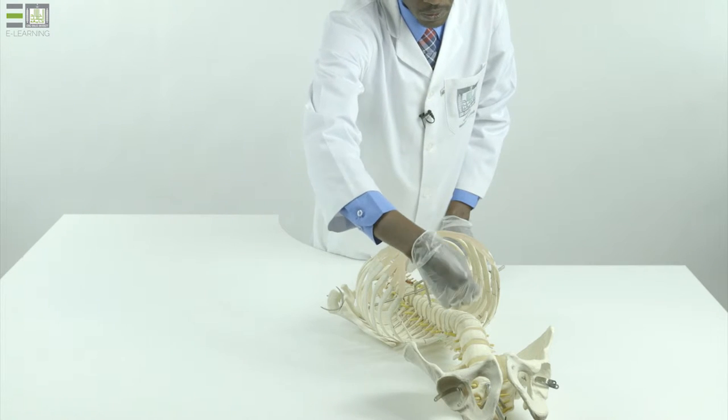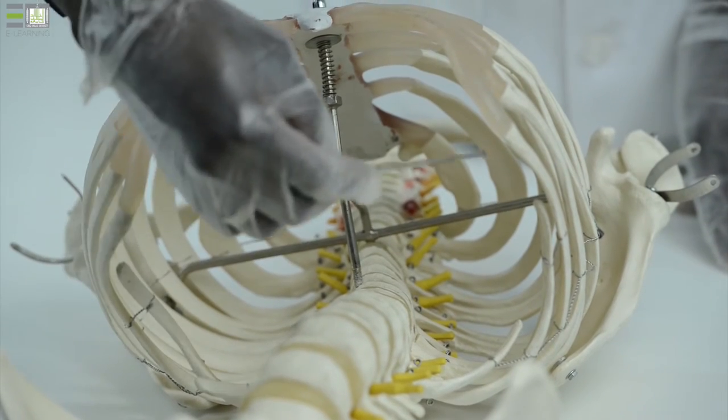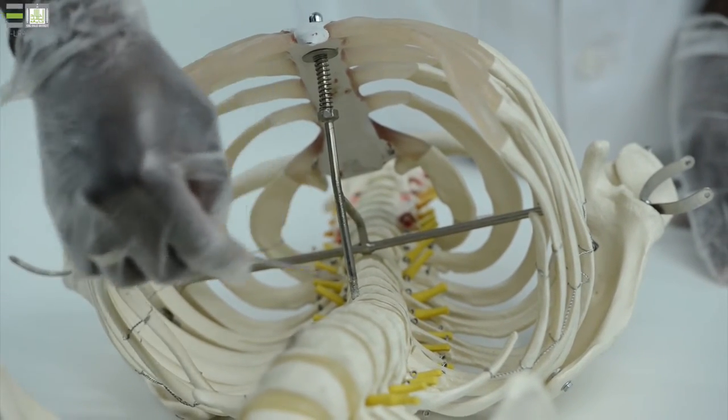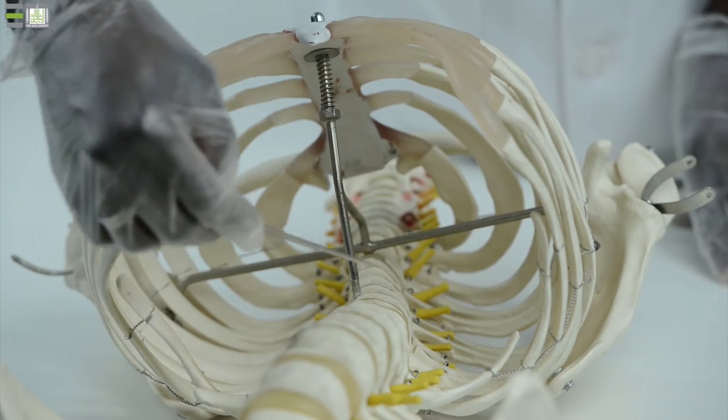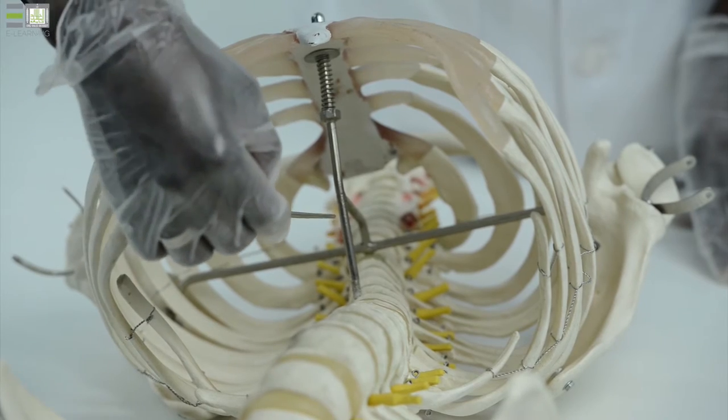This is called the inferior aperture of the thorax or thoracic outlet, which is closed by the diaphragm. These openings carry structures outside or into the thoracic cavity.